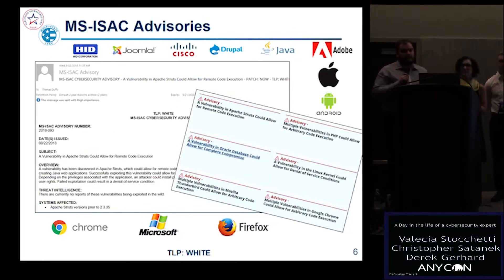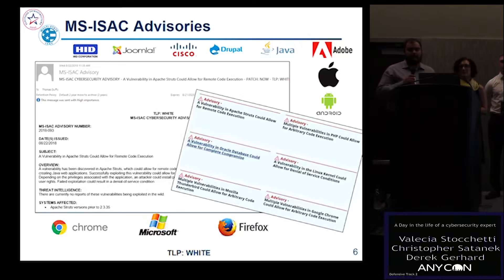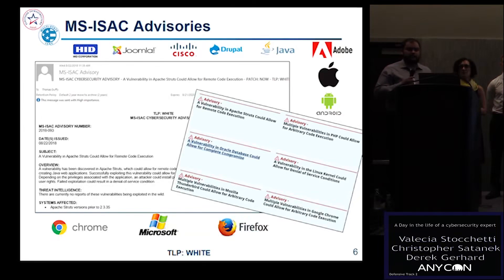Moving on to public services we provide: the MS-ISAC conducts vulnerability advisories published to our members and the public. When drafting advisories we look for software commonly used by our SLTT members as well as high-risk vulnerabilities — remote or arbitrary code execution and default passwords left in software. We tend to stick to the most critical items.